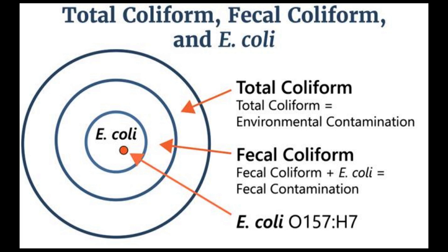So, what do you do if coliform bacteria are found in your water? Well, the water systems go into investigative mode. They collect more samples, inspect the system, and try to determine if there's a real issue. If coliform bacteria show up in the repeat samples, it's a confirmed problem. If total coliform bacteria are confirmed, your water system will work on identifying and eliminating the contamination source. This often involves system repairs, flushing, and temporary chlorination. The state health department steps in to help resolve the problem.